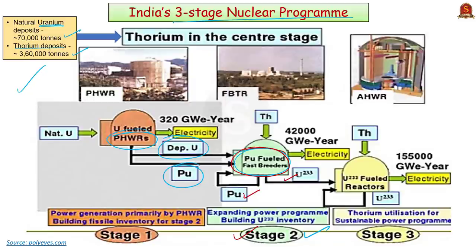The fast breeder reactors will produce electricity and more plutonium as uranium gets converted into plutonium — since more plutonium is produced, they are called breeders. Along with this, these breeders would convert some of the thorium into uranium-233, which can also be used to produce electricity. So uranium-233 is the input for Stage 3. After 3 or 4 decades of operation, the fast breeder reactors would have produced enough plutonium for use in the third stage. In Stage 3, uranium-233 would be used in specially designed reactors to produce energy and convert more thorium into uranium-233.